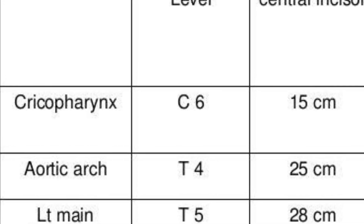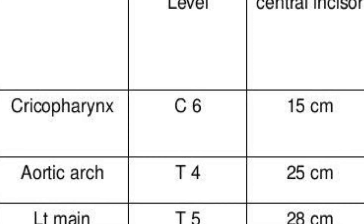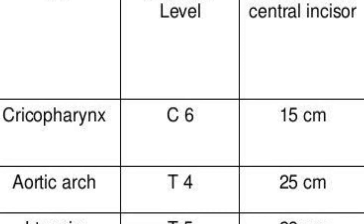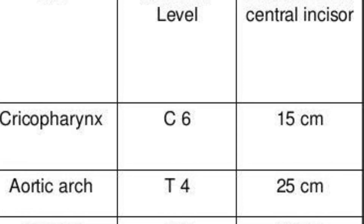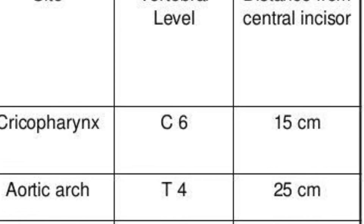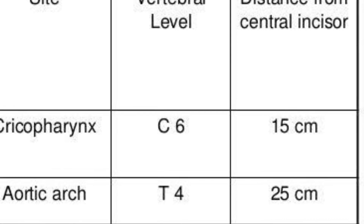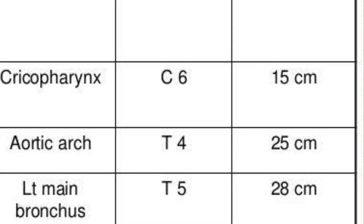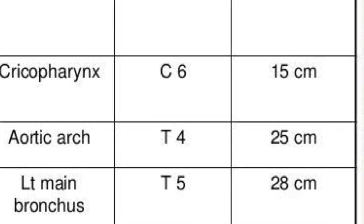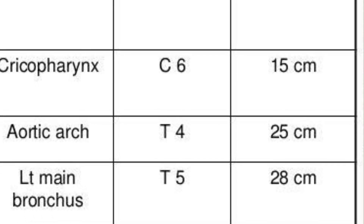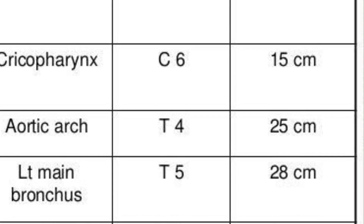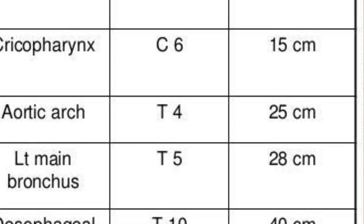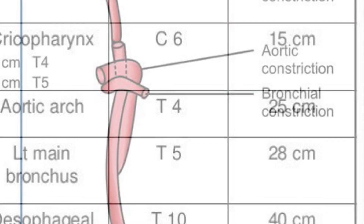In summary: the first constriction is about 15 cm from the incisor at the cricopharynx at the C6 vertebral level. The second constriction at the aortic arch is about 25 cm at the level of T4 vertebra. The third constriction at the left main bronchus is about 28 cm from the incisor at the level of T5 vertebra.